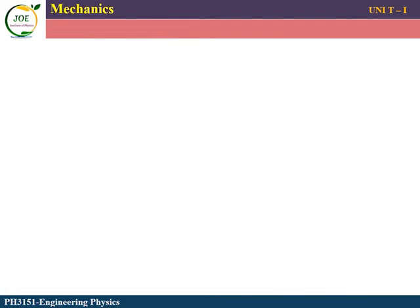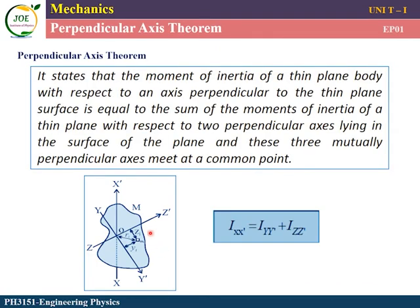Perpendicular Axis Theorem: for a thin plane object, imagine Y-Y prime and Z-Z prime perpendicular to each other, and X-X prime perpendicular to the plane. The perpendicular axis theorem states that the moment of inertia of a thin plane with respect to the axis perpendicular to the plane, I-ZZ prime, equals the sum of the moments of inertia with respect to two perpendicular axes lying in the plane.